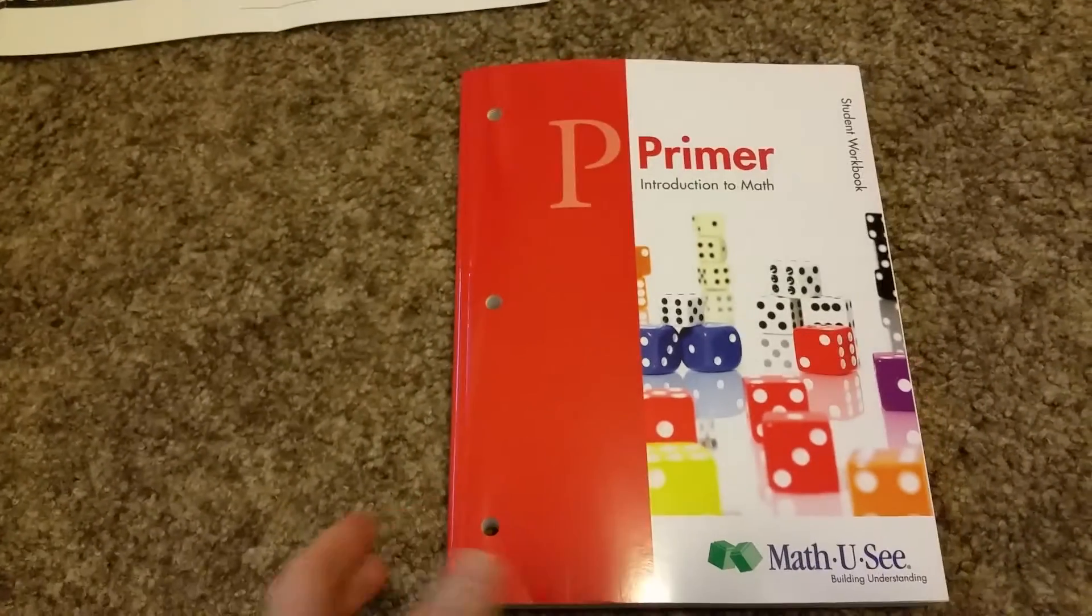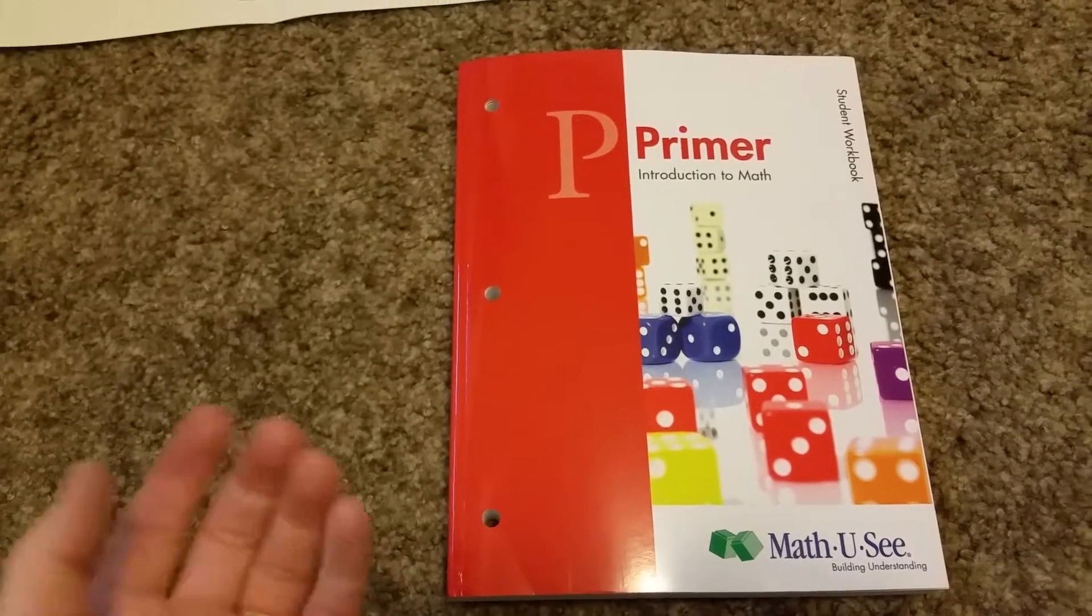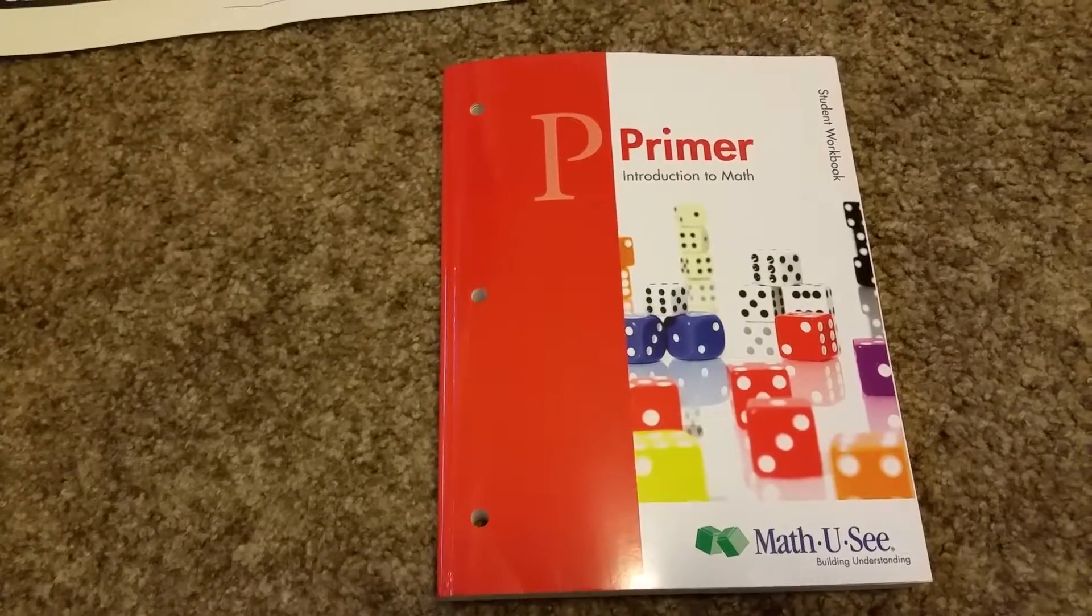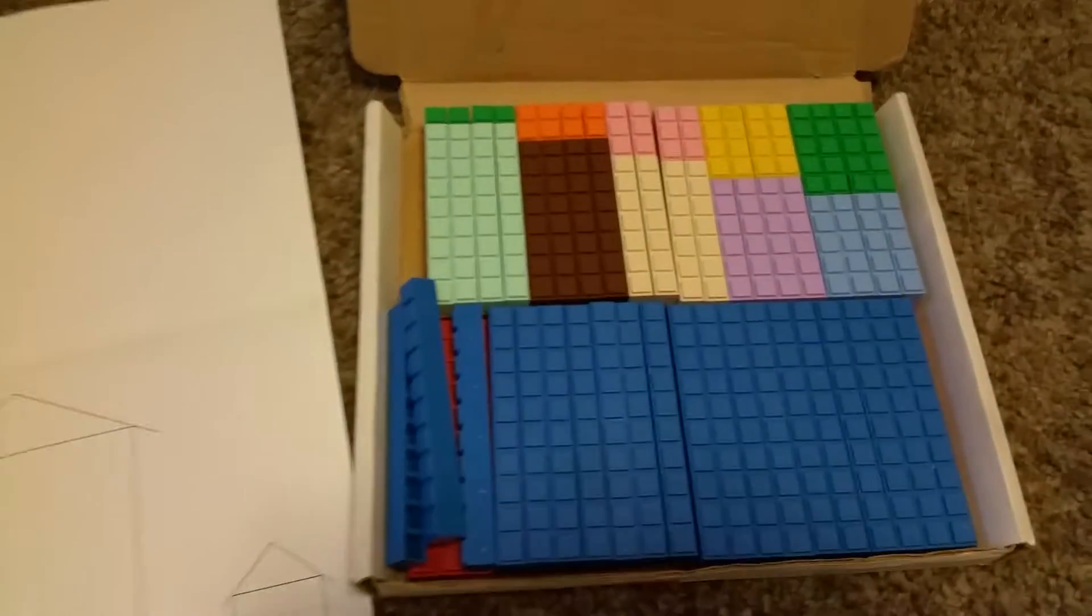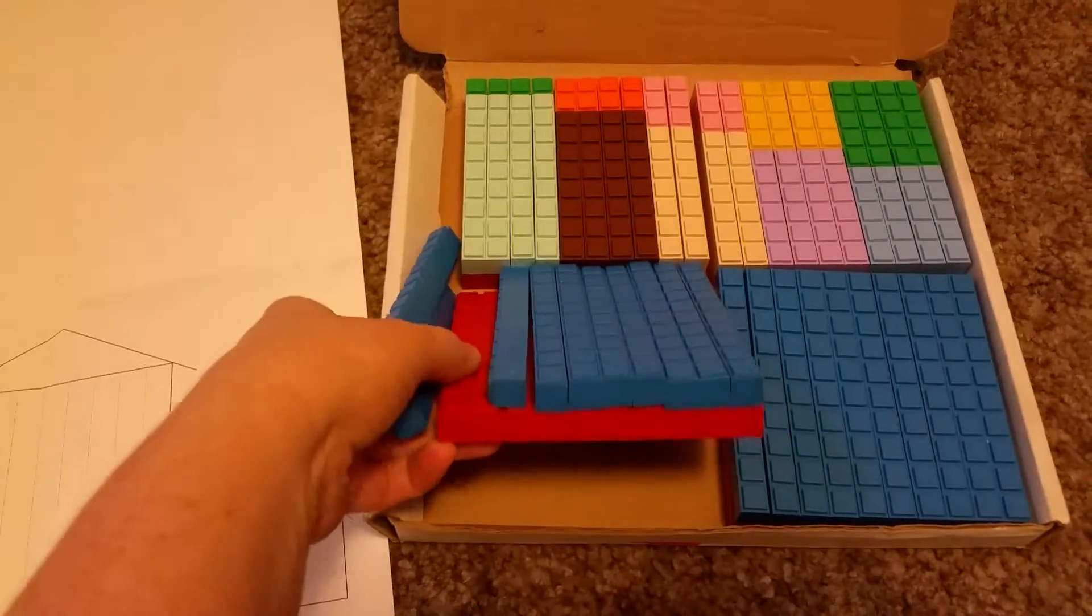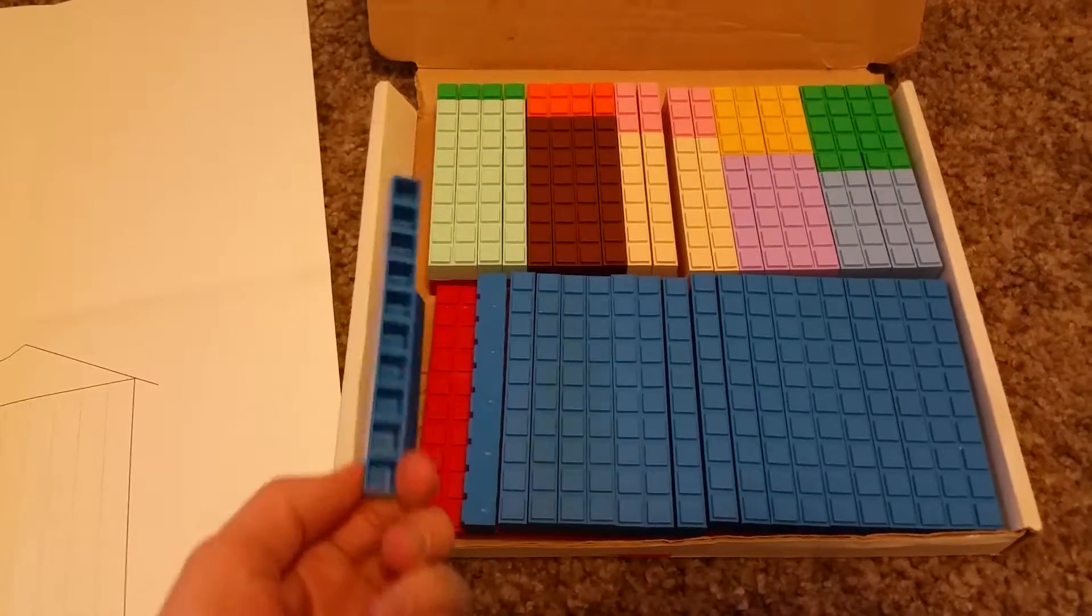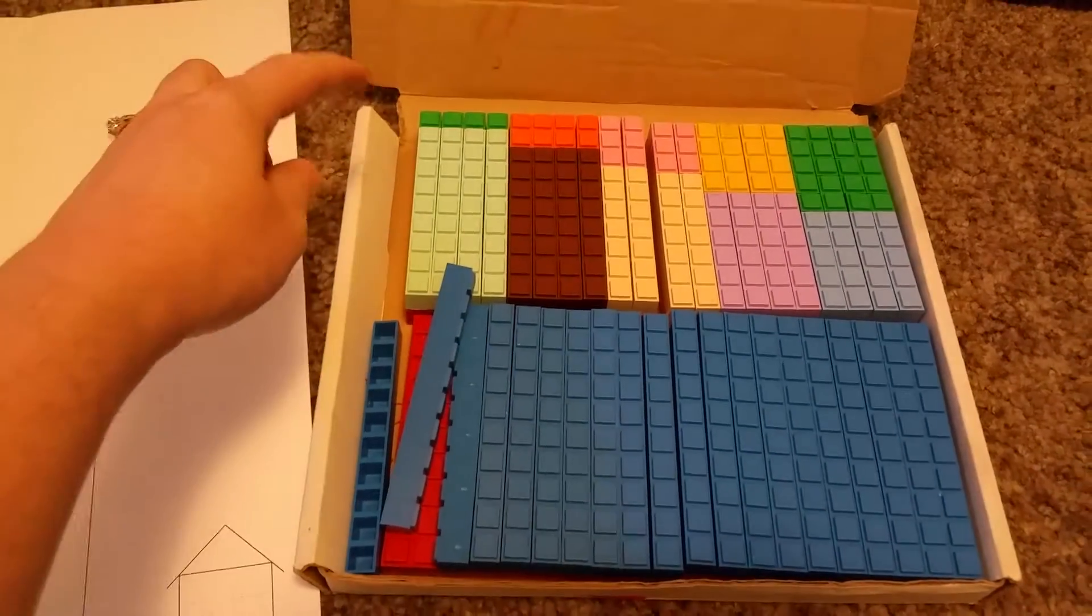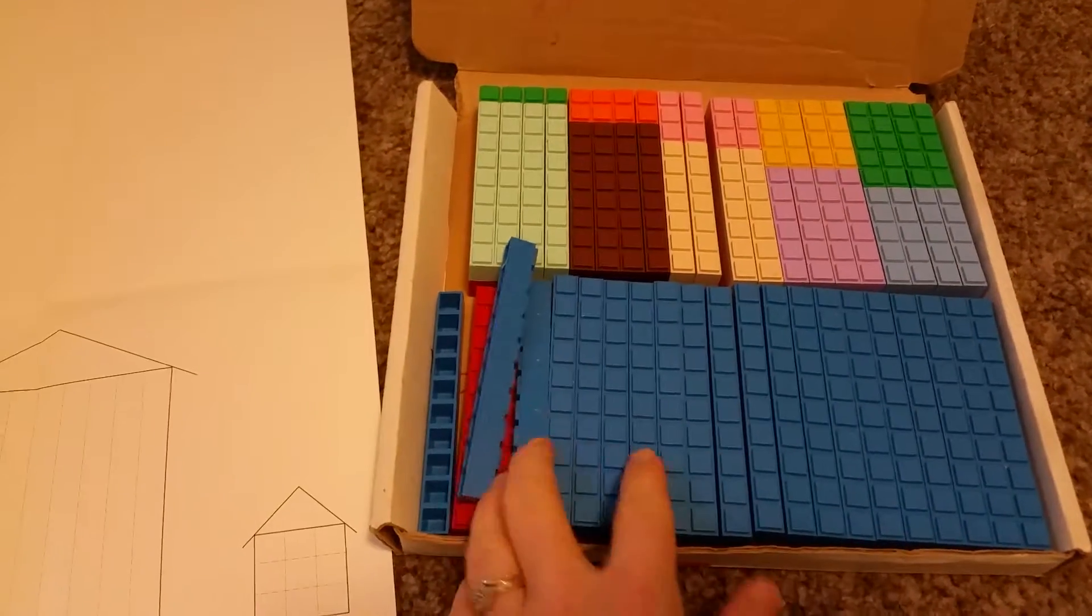So we want it to be fun, and Math-U-See is fun because it's hands-on. So it comes with blocks like this. So the big huge red ones underneath represent the hundreds blocks. These are the tens and the little green ones are the units and then they have the rest of the numbers there.